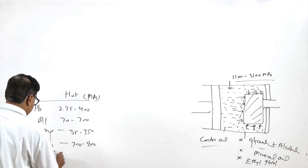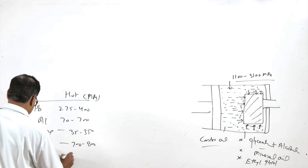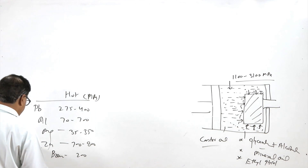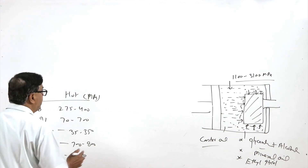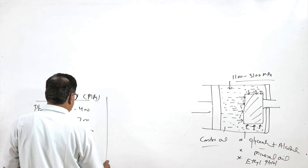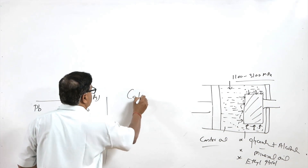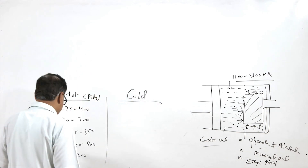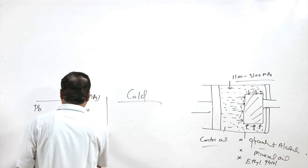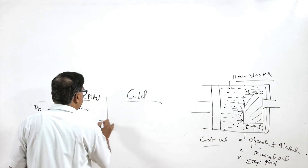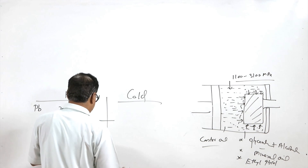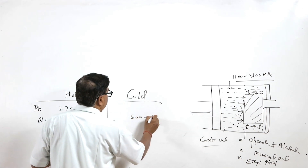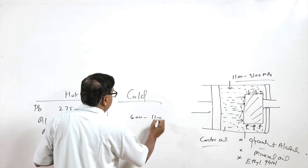For brass it is around 200 MPa. In cold extrusion conditions for aluminium it is 600 to 1100 MPa.